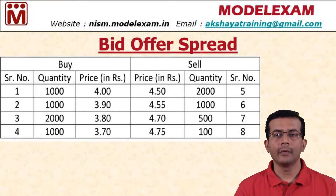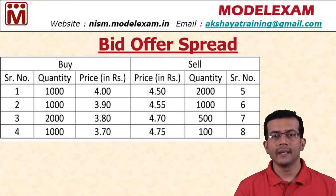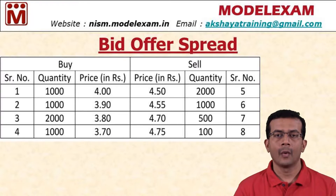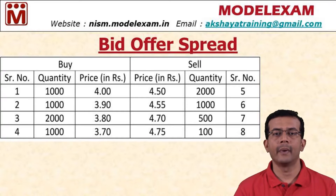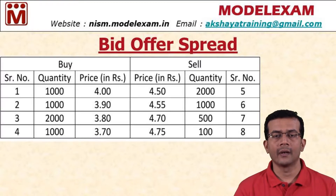Now for the bid-offer spread concept: the highest bid here is 4 rupees and the lowest offer is 4.50 rupees. The difference between the two is 0.50 rupees, or 50 paise. This 50 paise is the bid-offer spread, and it gives you an indication of the liquidity in that stock.